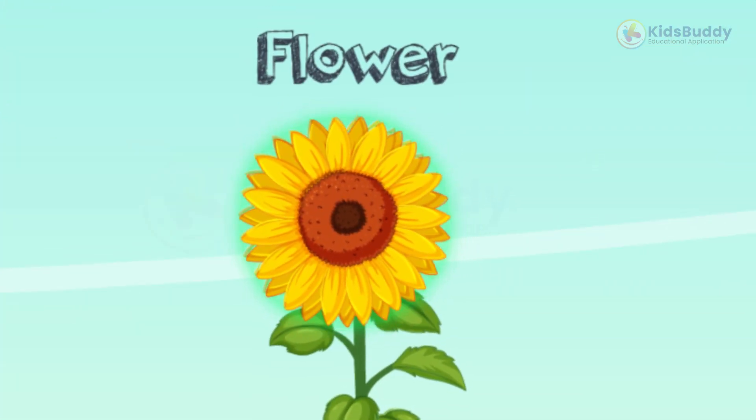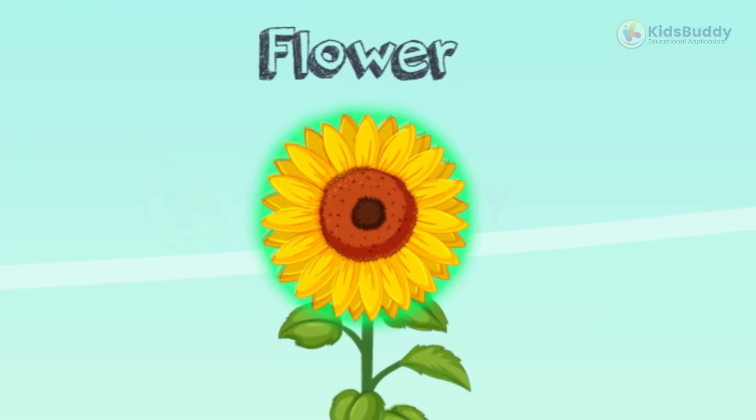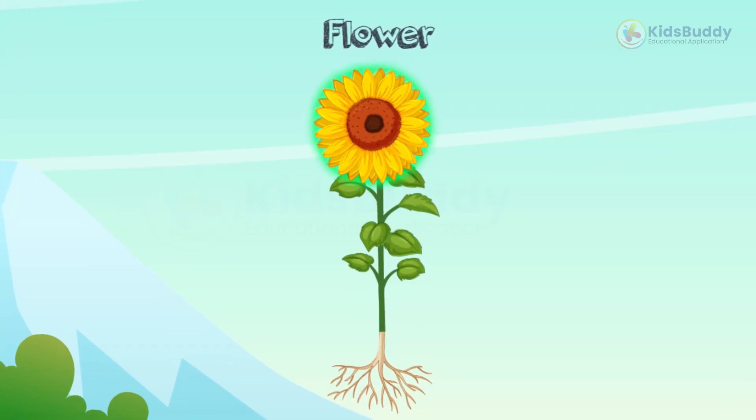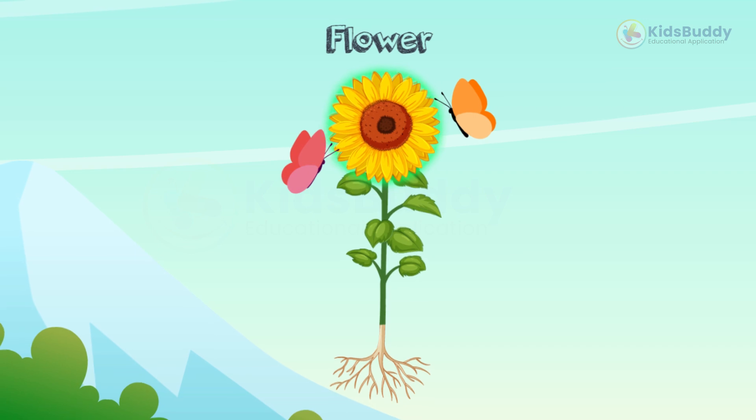The flower is the reproductive part of a plant and is responsible for producing seeds. It is also what attracts pollinators like bees and butterflies.